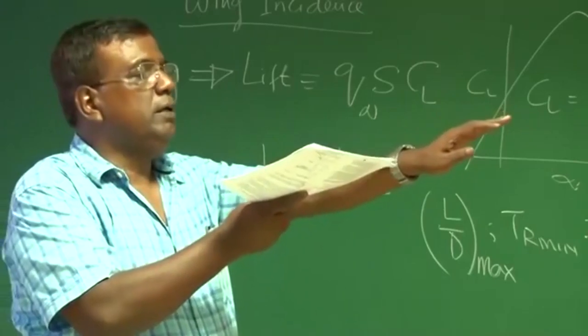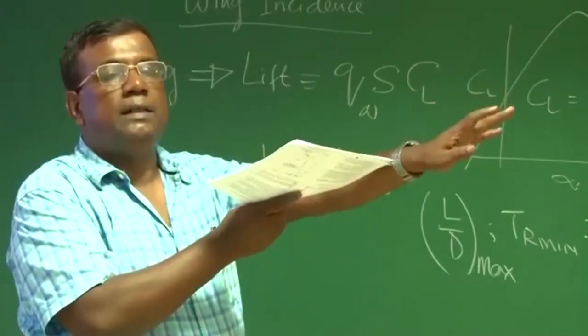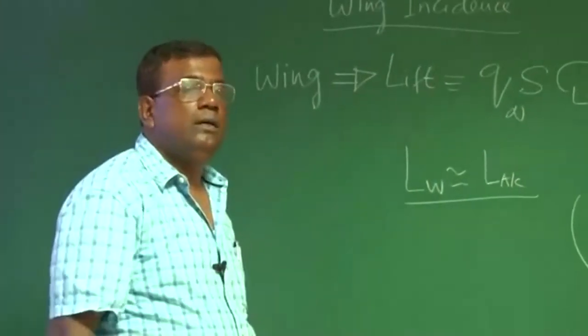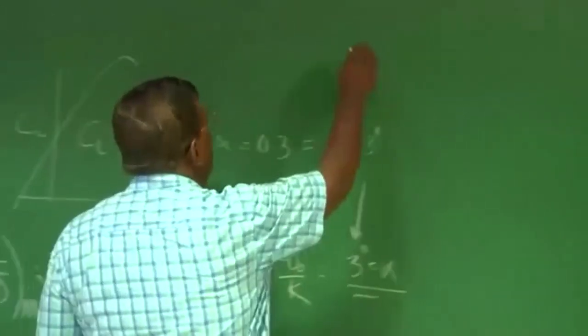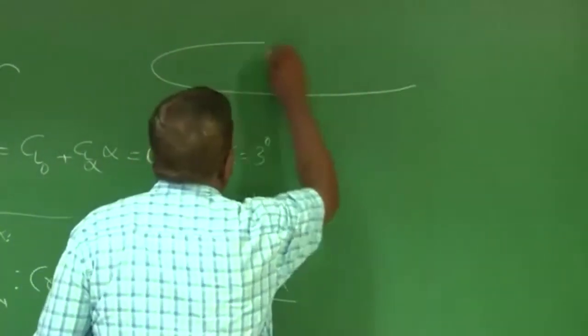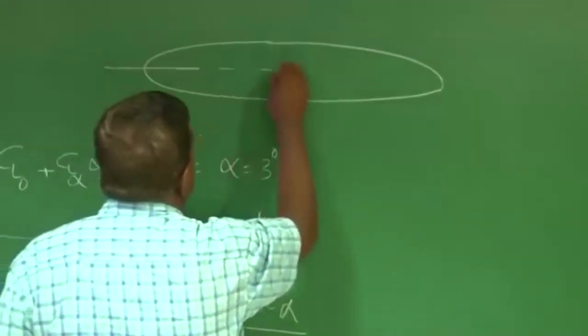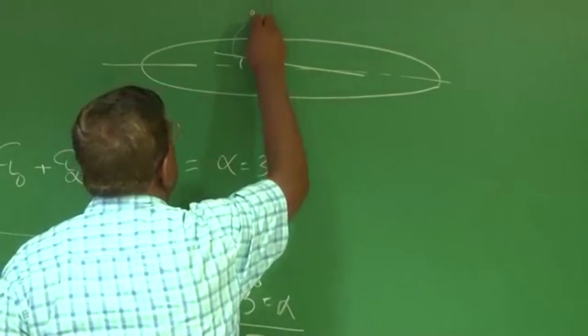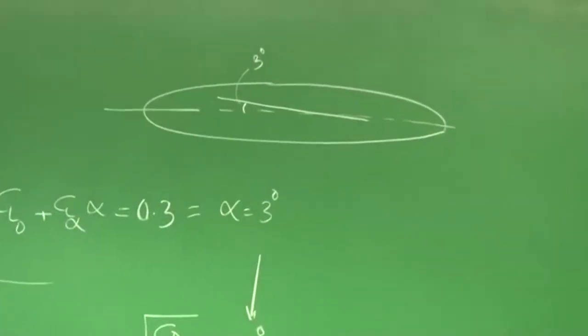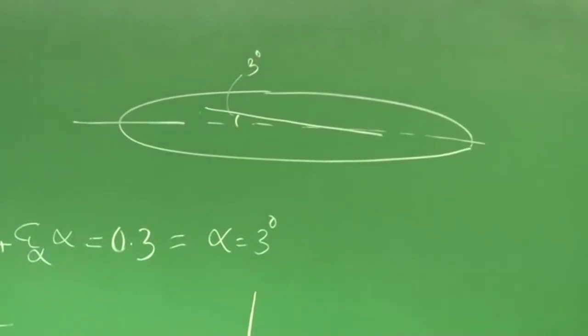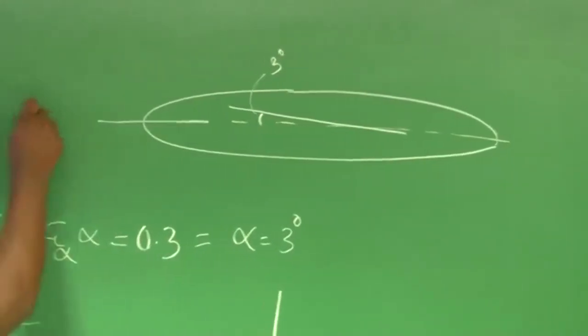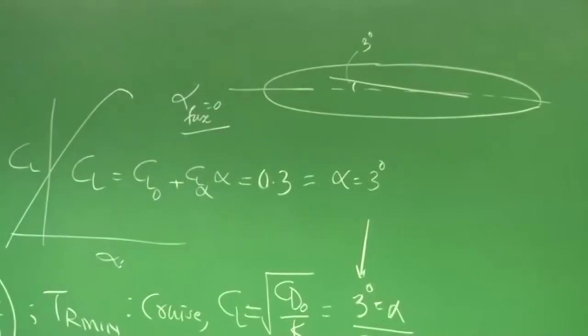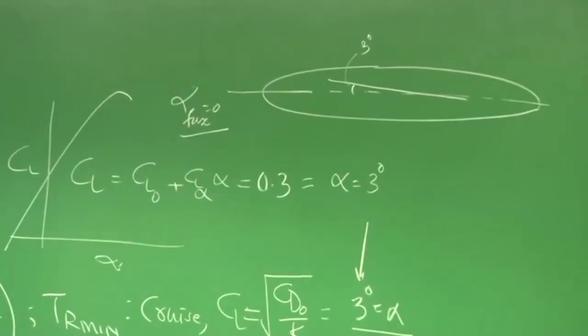So lift will primarily come from the wing, but fuselage being at 3 degrees will also give some drag, larger drag. So the question comes, why do you want to tilt the fuselage? Why not set the wing? This is the fuselage reference line. Set the wing so that wing setting angle is 3 degrees. So in that case, ideally what will happen, the fuselage will have almost 0 degrees. Alpha fuselage will be 0 degrees. So drag from the fuselage will be much lower. So that was the concept behind wing incidence.